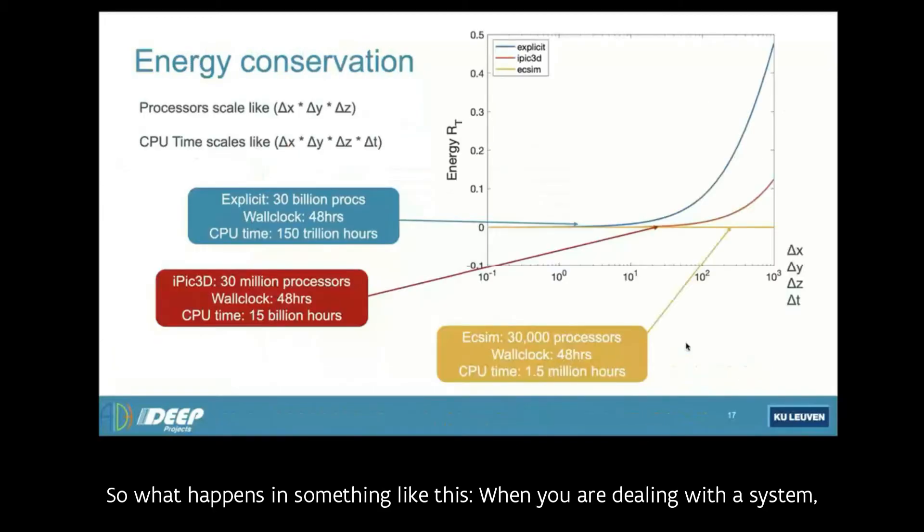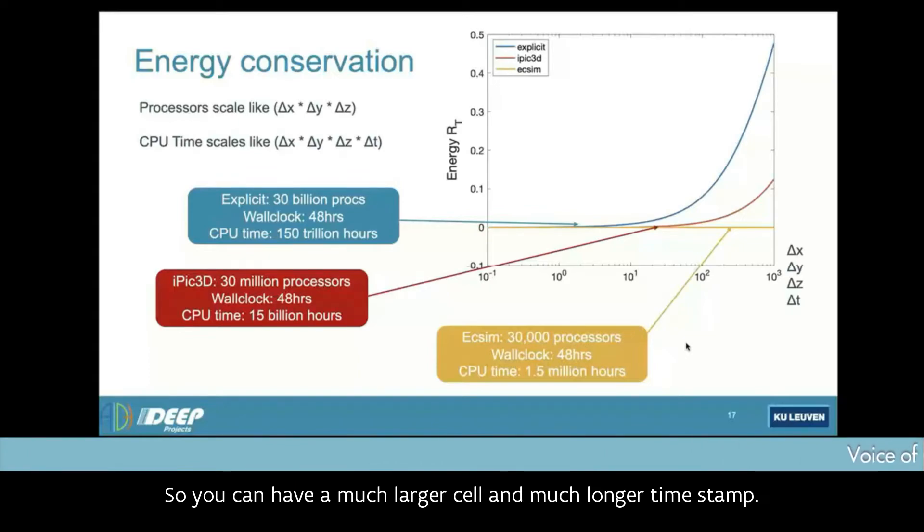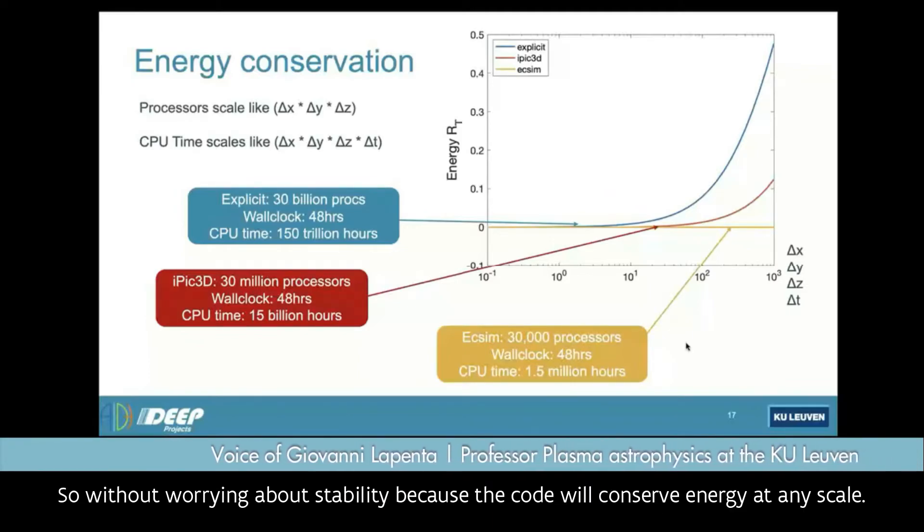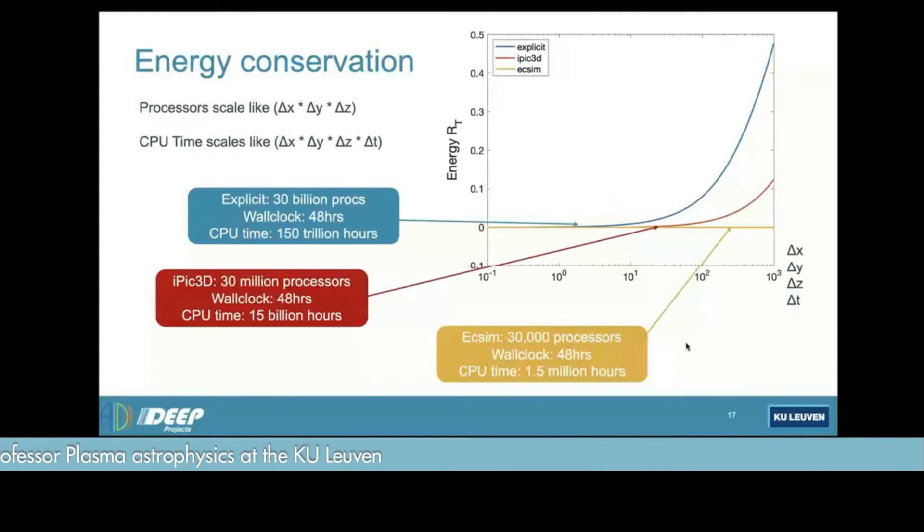So what happens is something like this. When you are dealing with a system, if you do this explicitly as a blue curve, at some very small resolution, the system starts to lose energy conservation. If you go to the semi-implicit method of the older type, this happens still, but much later at much higher resolution. So you can have a much larger cell and much longer time step. But if you use the latest method, this never happens. It's conserving energy at any resolution. So without worrying about stability, because the code will conserve energy at any scale.